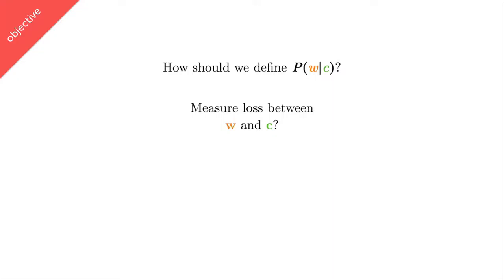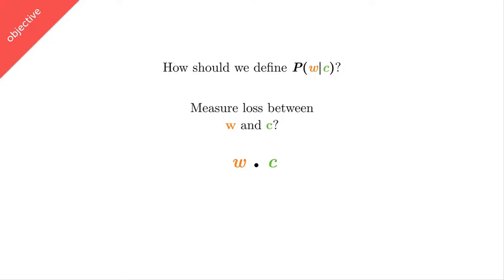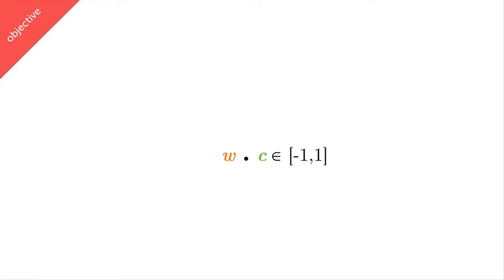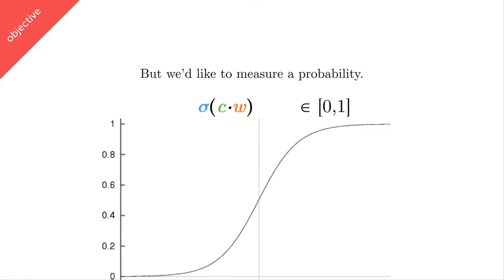So let's talk about what that kernel is. How should I measure the loss between W and C? It boils down to trying to measure the difference between those two things. We want to make them as similar as possible when we see them in the same context, and as dissimilar as possible if we never see those two words together. We're going to measure the difference as just the dot product between those two vectors. We could have chosen Euclidean distance or something fancier, but here we just use the dot product. The dot product has nice familiar properties: if two word vectors are very similar, like Canada and snow, the dot product is close to one. If they're orthogonal, it's close to zero. And if they're really dissimilar, it's close to negative one.